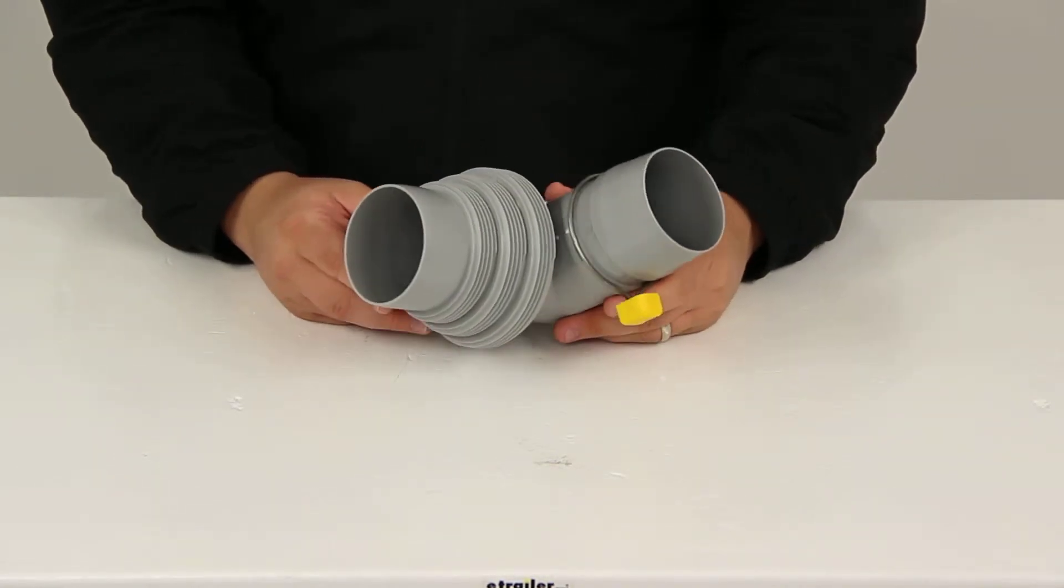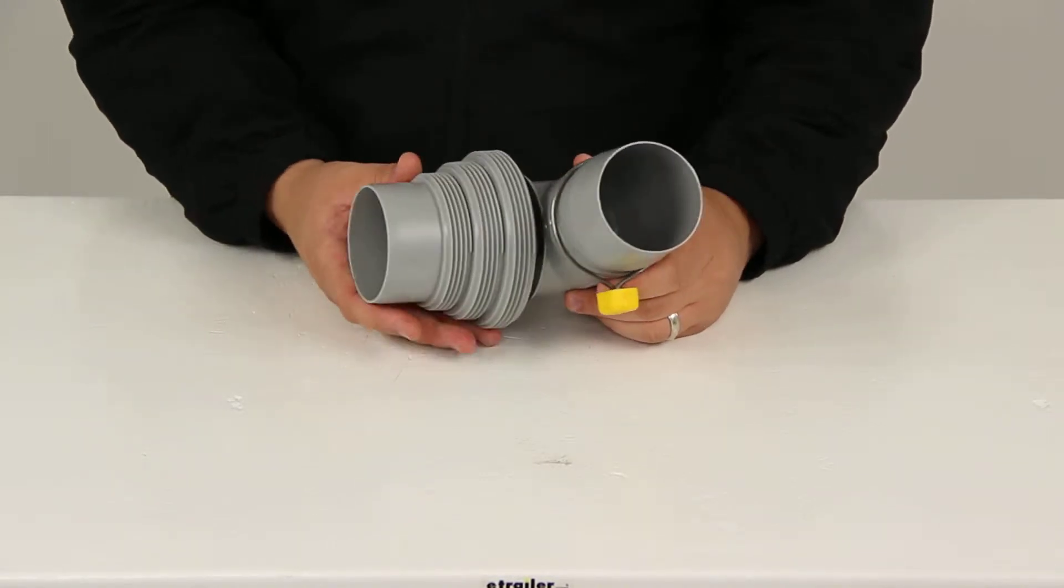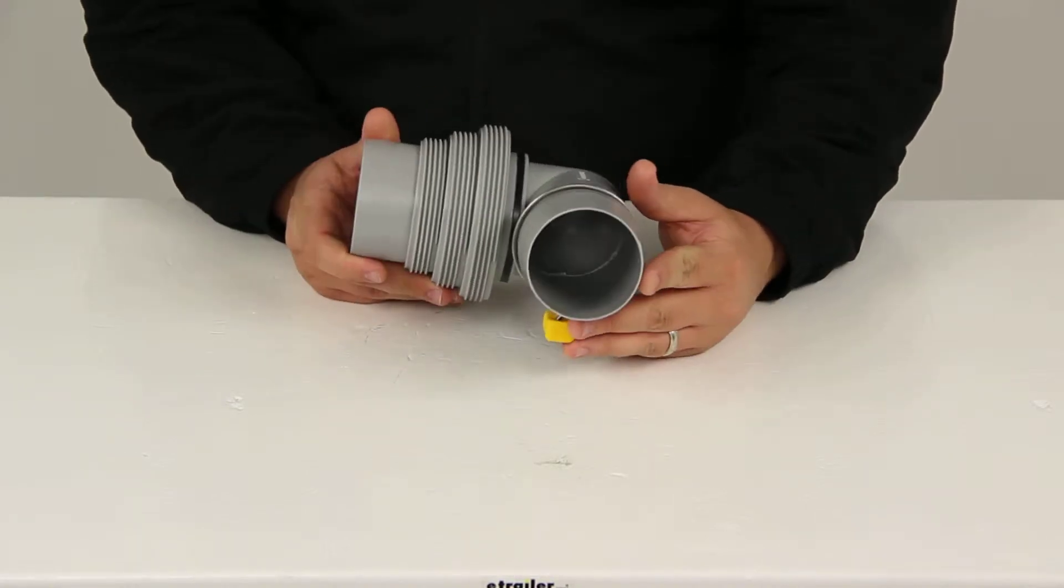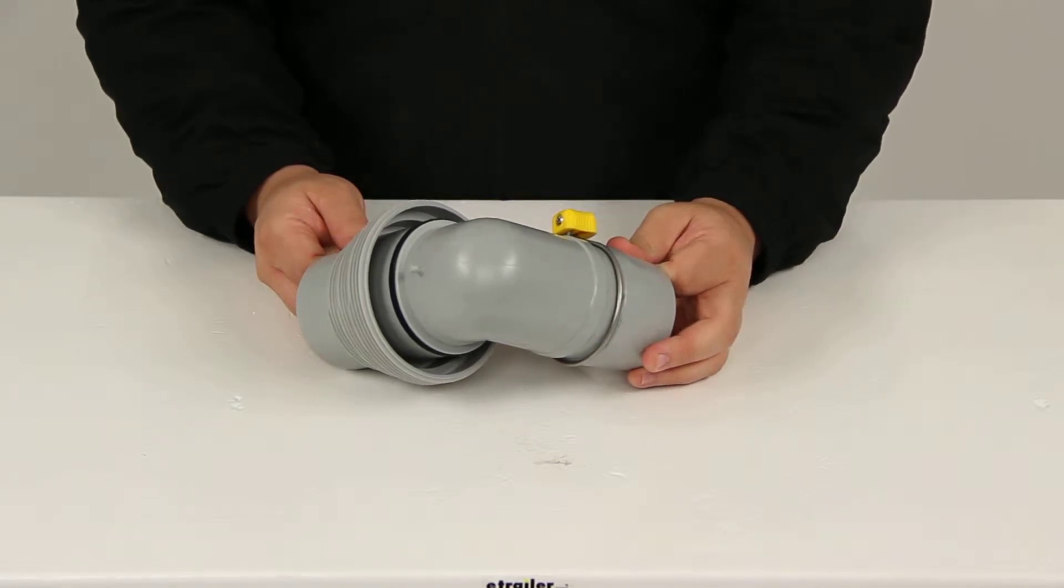The Easy Slip adapters make connecting your RV sewer hose to a dump station easier. It's designed to fit all 3-inch sewer hose systems and slip over fittings. The elbow fitting helps relieve stress on your hose when attaching to the dump station inlet.